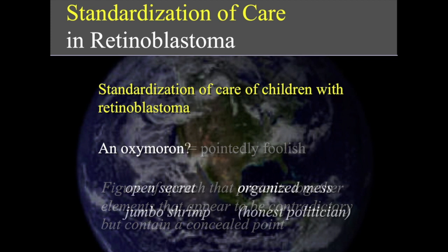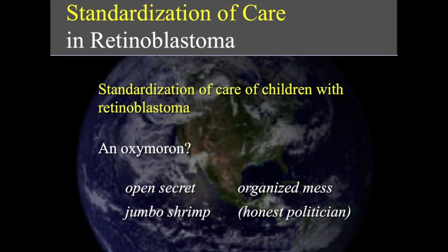In practice, 'open secret' is an oxymoron, because something can't be open data and a secret at the same time. Or 'organized mess,' that many of us have on our desk. Or 'jungle shrimp' that you can buy. And 'an honest politician' — though these are in brackets, because not everyone would agree. But unquestionably, the first and latter parts of these phrases are fighting with each other.